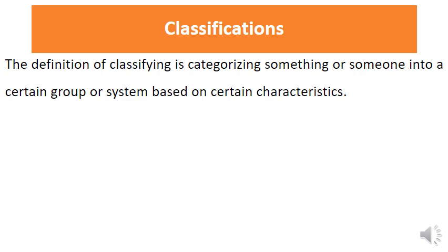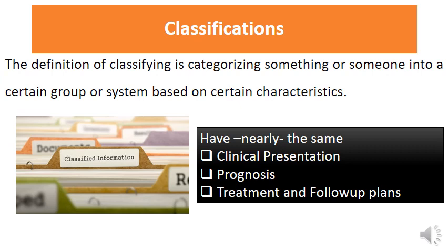The second objective is the classification of acute kidney injury. Classification means categorizing patients into groups based on certain characteristics. Classified patients in one group share nearly the same clinical presentation, prognosis, treatment, and follow-up plans. The classification guides management, the frequency of visits, investigations, and prognosis. Each stage carries the same plan of management, follow-up, investigations, and nearly the same prognosis — this is the idea of any classification in medicine.